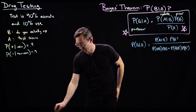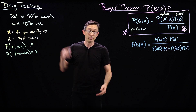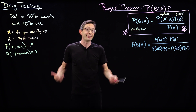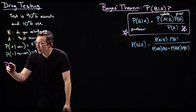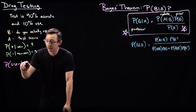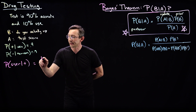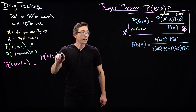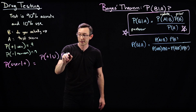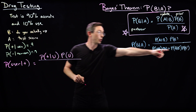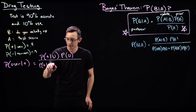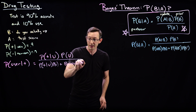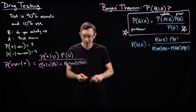We're going to ask a very Bayesian question: if I test my employee and the test comes up positive, given that positive test, are they in fact a user? What's the probability they actually did drugs given that positive test? Using Bayes' theorem, the probability of being a user given a positive test equals: the probability of a positive test given a user, times the probability of them being a user (10%), divided by — using the law of total probability — that same numerator plus the probability of a positive test given a non-user, times the probability of not using.